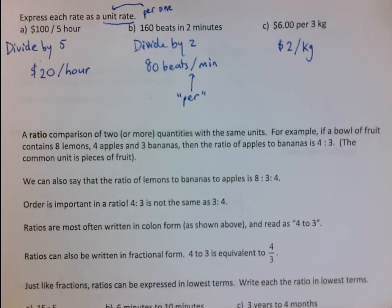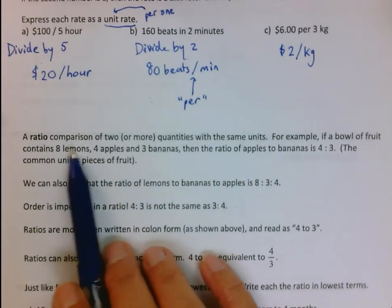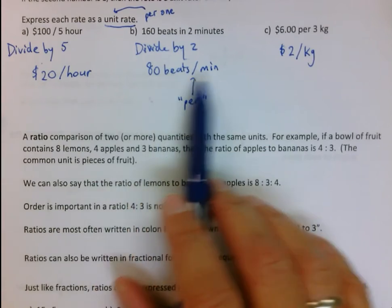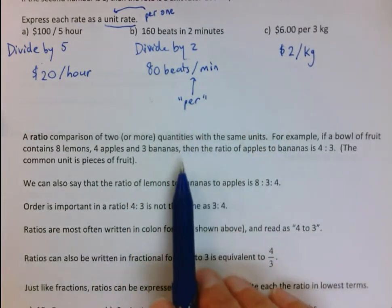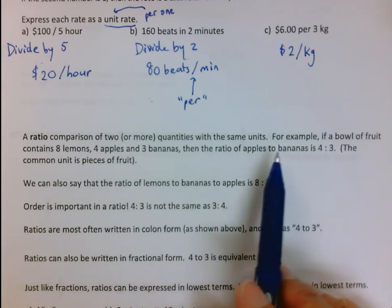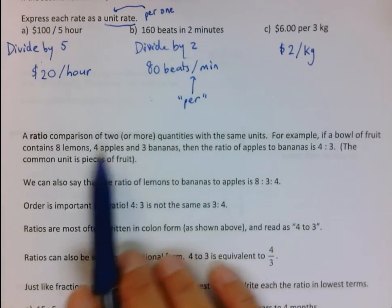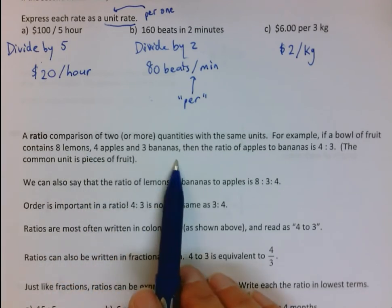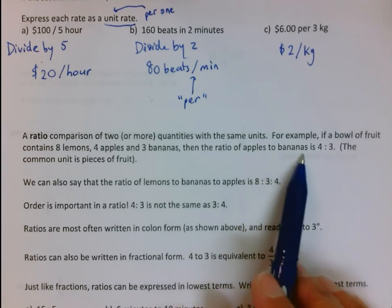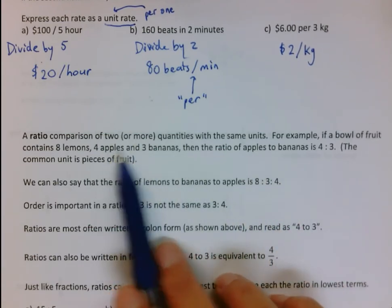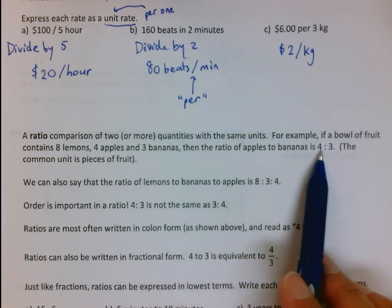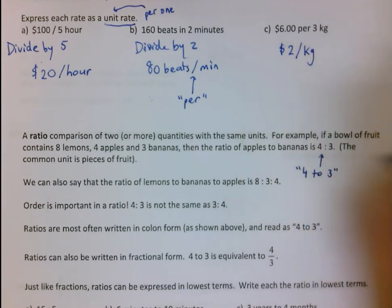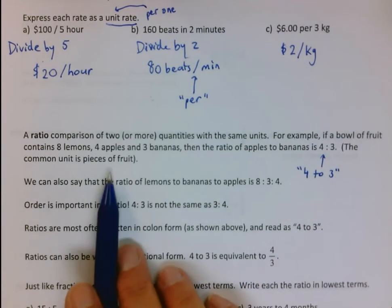The next word is ratio. A ratio is a comparison of two or more quantities with the same unit. For example, we're going to do an example with fruit, it's all fruit. The fruit basket contains eight lemons, four apples and three bananas. Then the ratio of apples to bananas is four to three. For every four apples in the basket, there's three bananas. And we read this four to three. This is called the ratio.